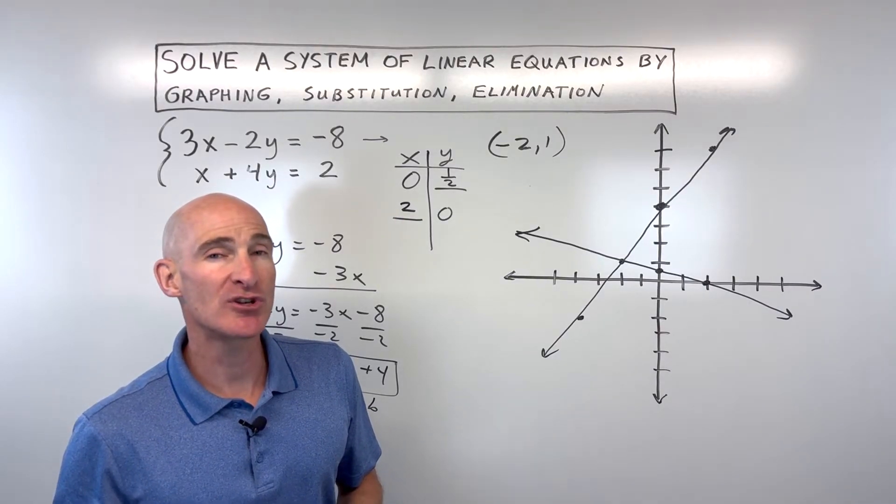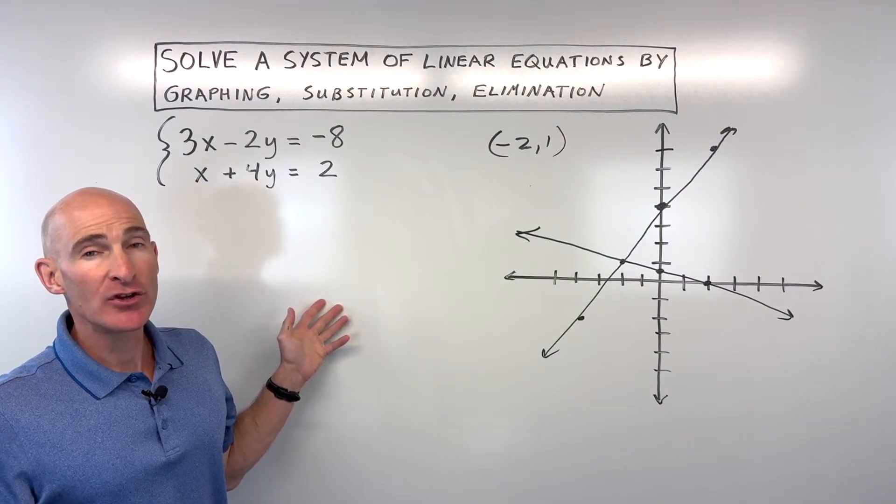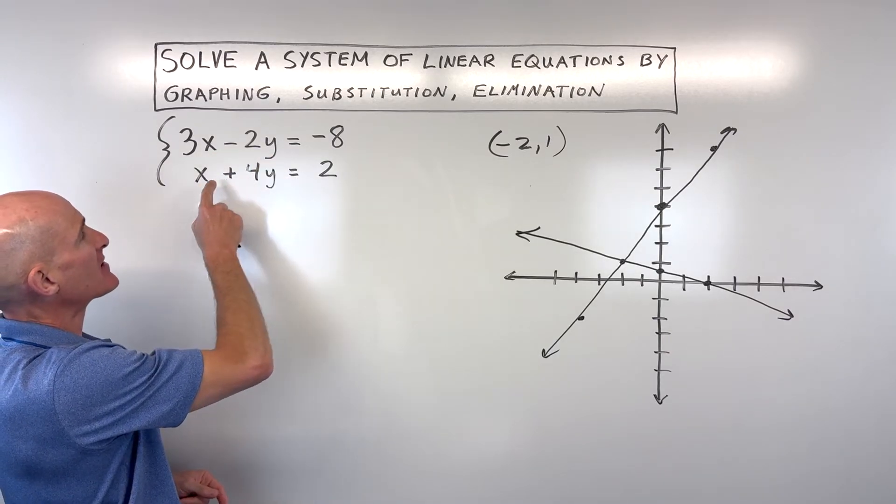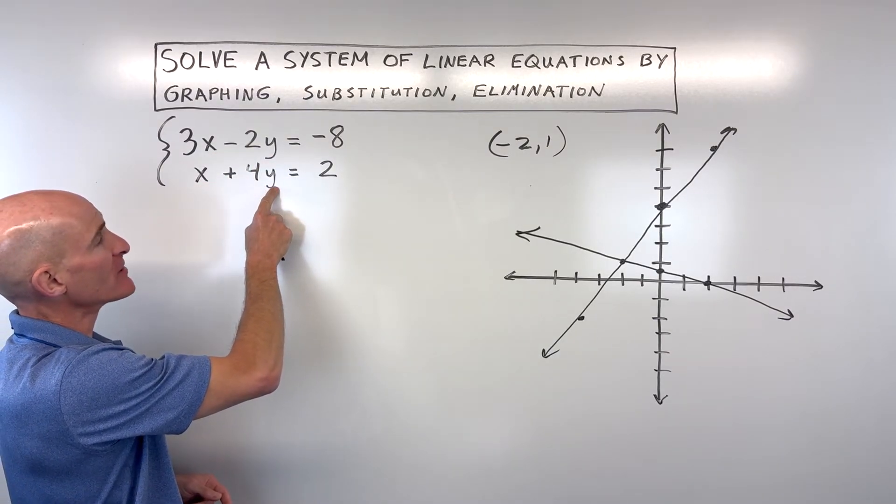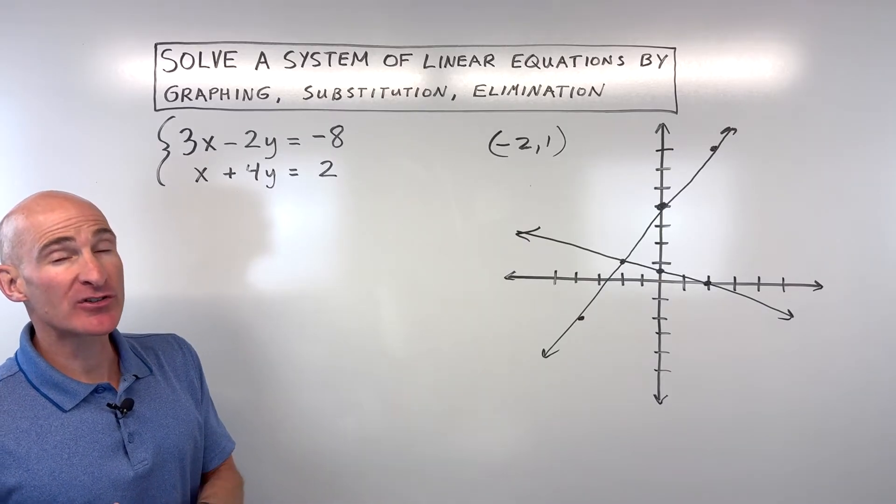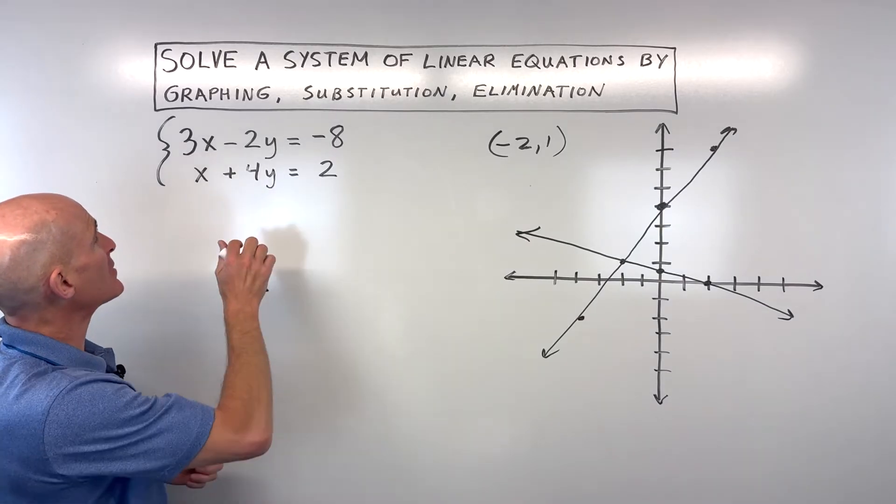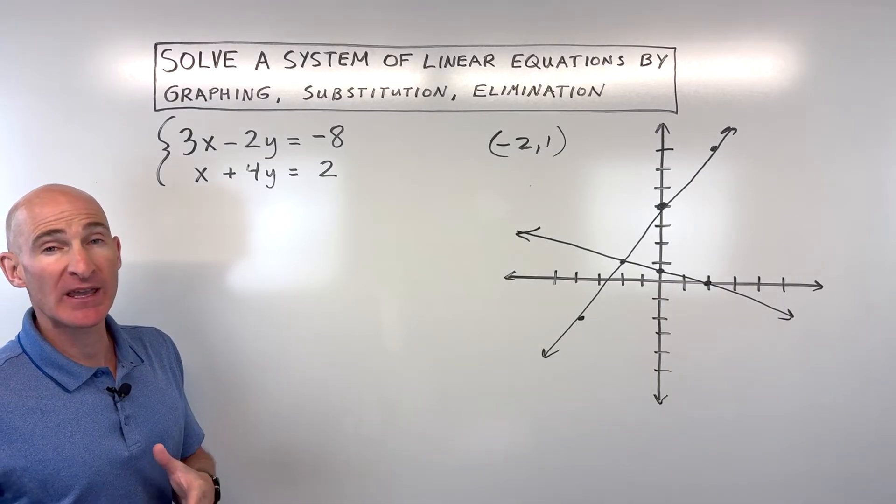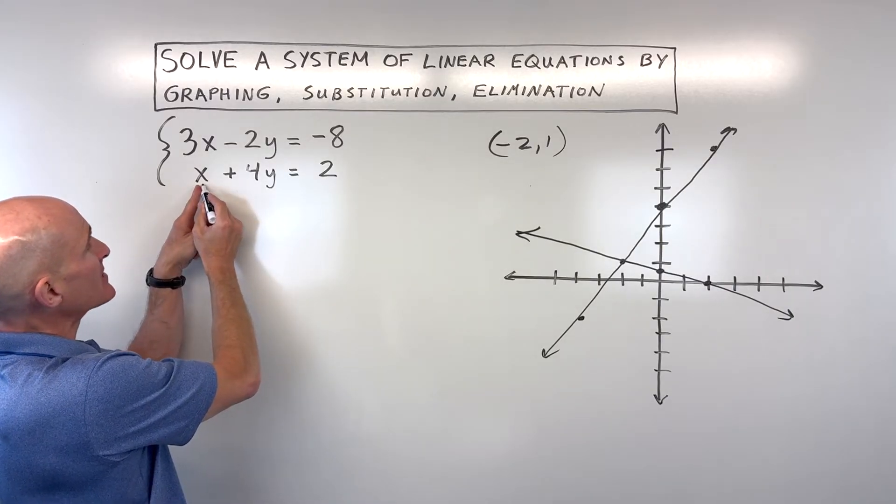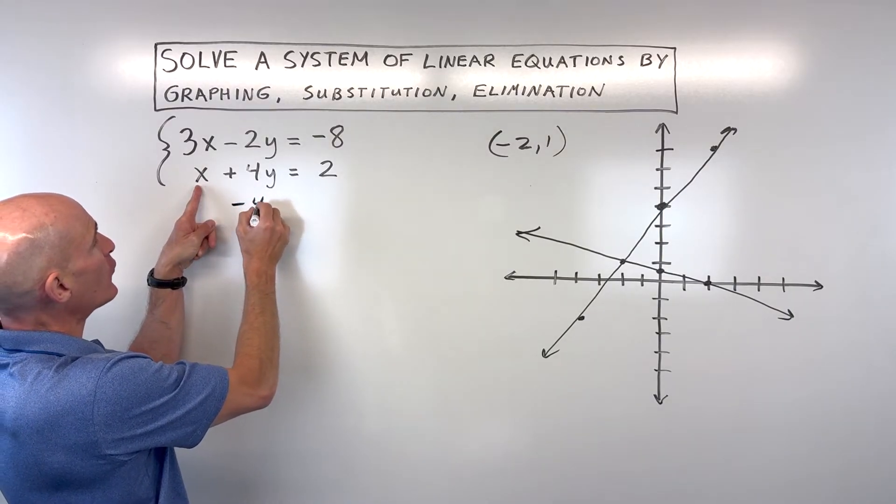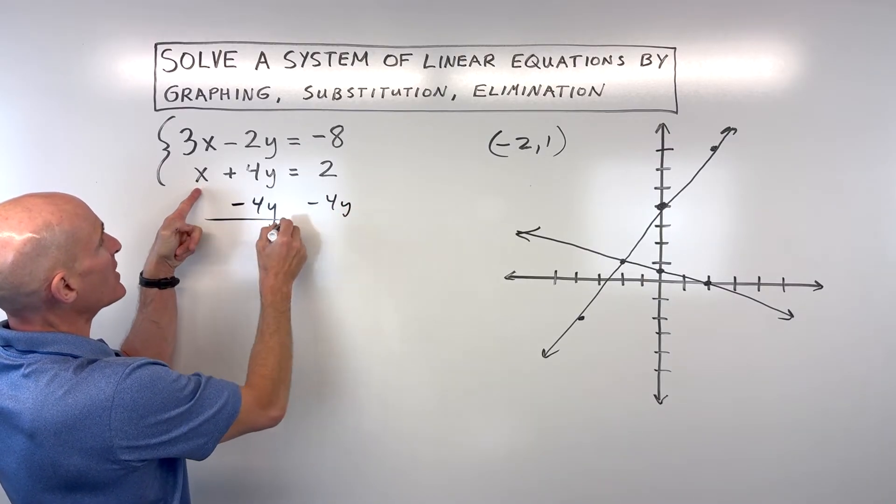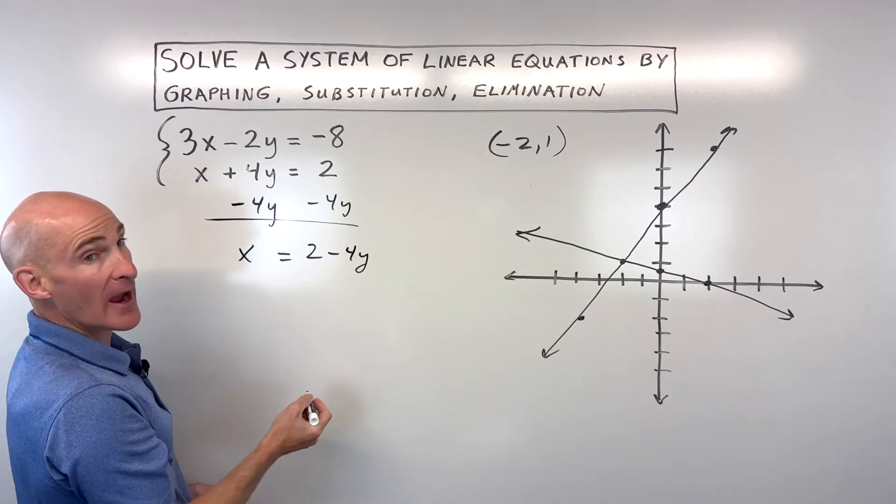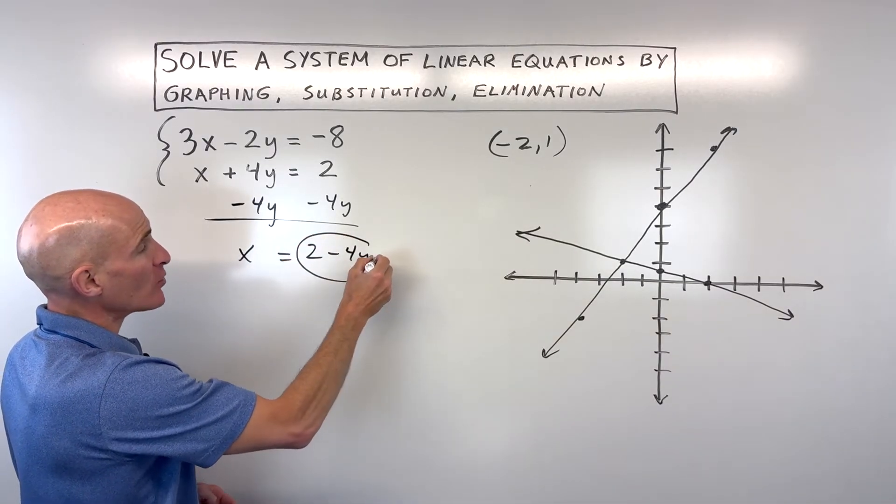Let's talk about the substitution method next. Now, in the substitution method, you want to solve for one of the variables, meaning you either want to get this x by itself, this y by itself, this x by itself, or this y by itself. Now, to make it easier on yourself, try to get the variable by itself that has 1 as a coefficient. This way, you'll avoid a lot of fractions. It'll make it easier to solve. So, in this case, I'm going to isolate this x by subtracting 4y from both sides of this equation. So, that's going to give us x equals 2 minus 4y. Now, we know what x equals in terms of y.